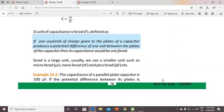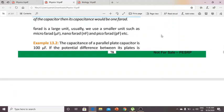The SI unit of capacitance is the farad. We define it as: if one coulomb of charge is given to the plates of a capacitor, then its capacitance would be one farad. Farad is a large unit, so we usually use smaller units.